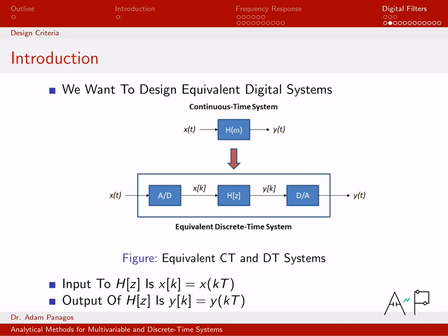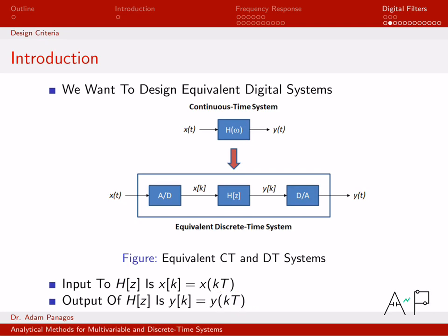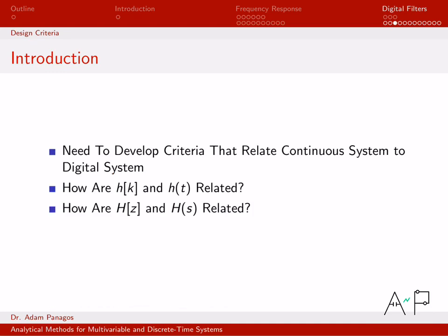One key thing to remember: the discrete time signal input to H(z) is just our sampled X(t). When we sample X(t) we replace the continuous time variable t with kT, where capital T is the sampling period and k is the discrete time increment. The same applies to Y(k) — it's related to the continuous time version by replacing little t with k·capital T.